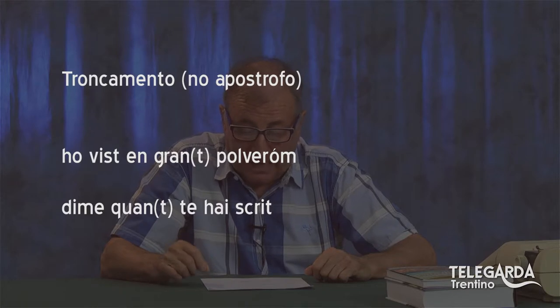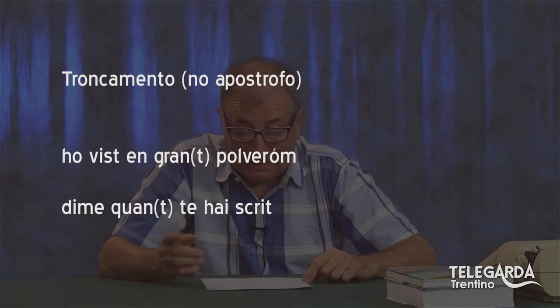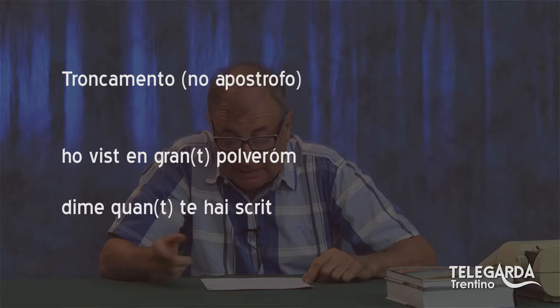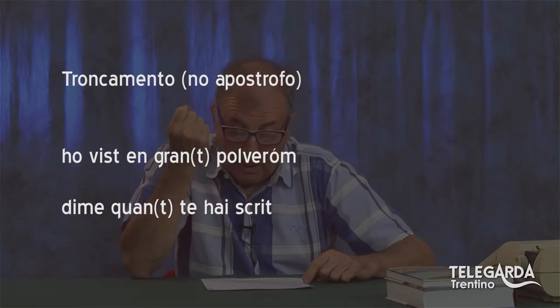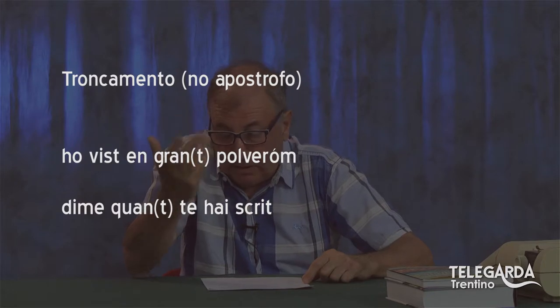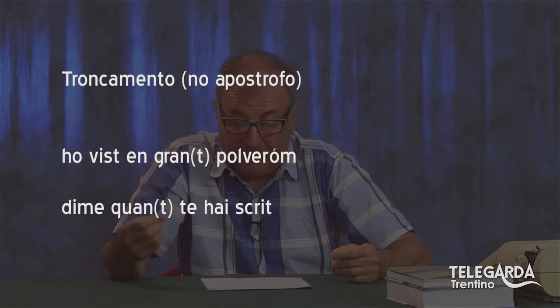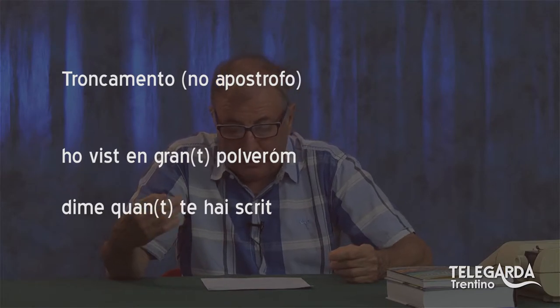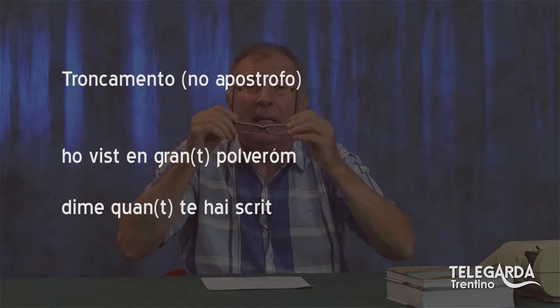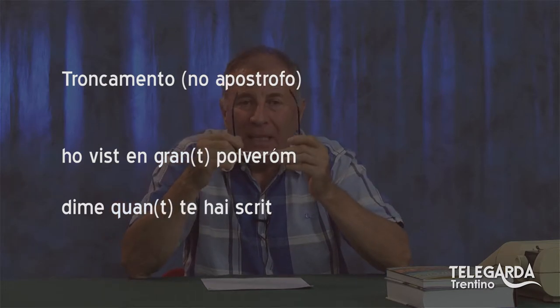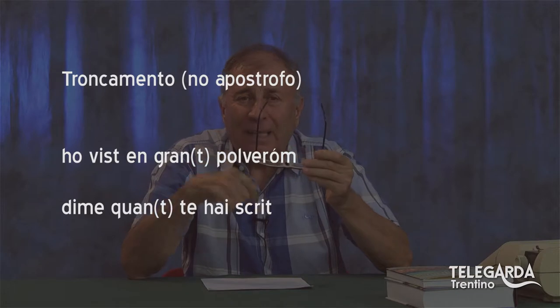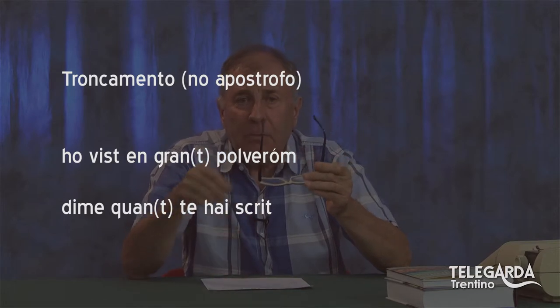Dimé quant te hai scritto? Stessa cosa: c'è lo scontro fra la T di quant e la T di te, quindi per una questione fonetica cade la T di quant. Il problema del dialetto è che la fonetica crea difficoltà: bisogna usare spesso l'apostrofo o il troncamento, e naturalmente gli accenti tonici e fonici.